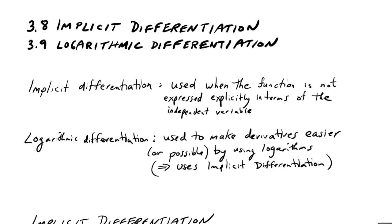Implicit differentiation is used when the function is not expressed explicitly in terms of the independent variable, and I'll show you what that means.